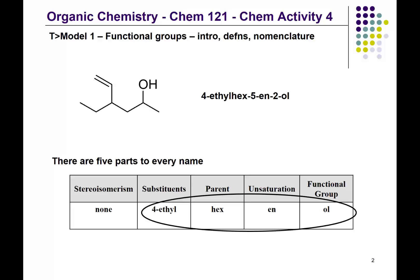When numbering a chain to indicate where various things are, we usually number the chain so as to give the lowest possible number to substituents, or if there's unsaturation, the lowest possible number to unsaturation. Now you'll see that we in fact give the lowest possible number to the functional group, because the functional group is the most important thing on a chain or on a ring.